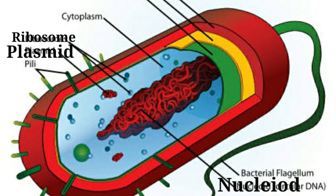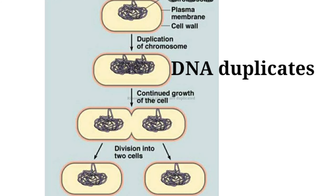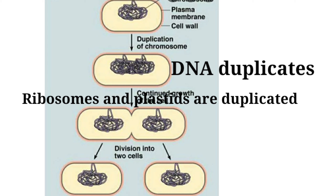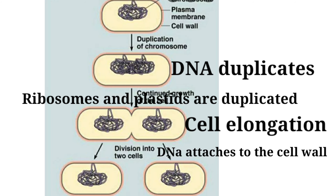During binary fission in bacteria, the first step is DNA duplication. The second step is that ribosomes and plasmids are duplicated, the cell gets elongated, DNA attaches to the cell wall, and the cell splits into two daughter cells. This is a simple form of cell division in prokaryotic cells called amitosis or binary fission. Mitosis and meiosis will be covered in the next video.